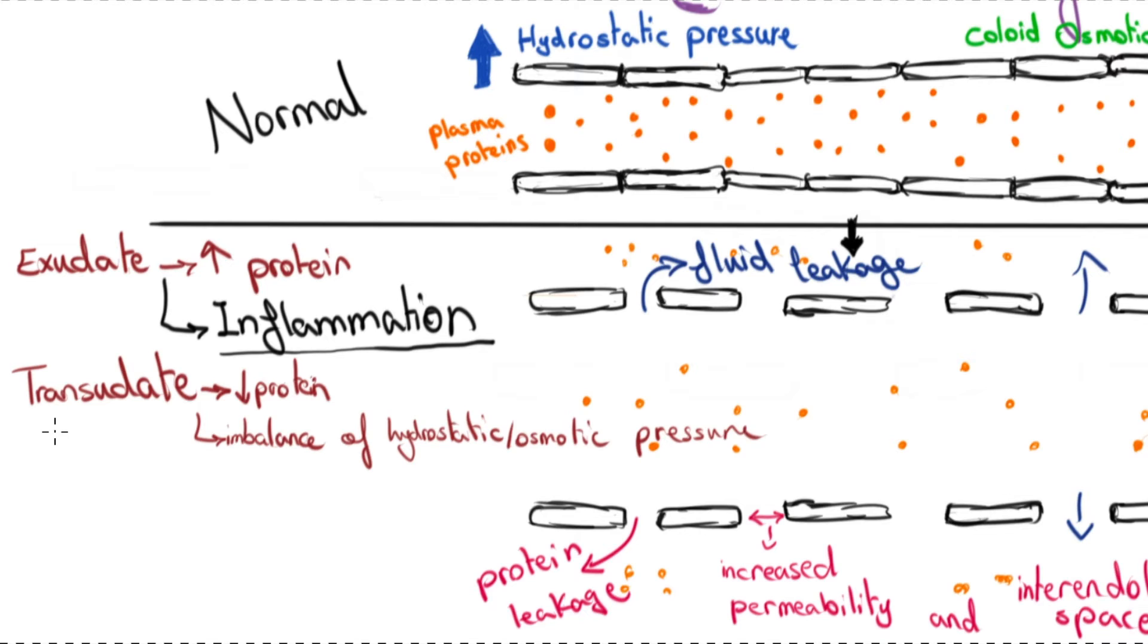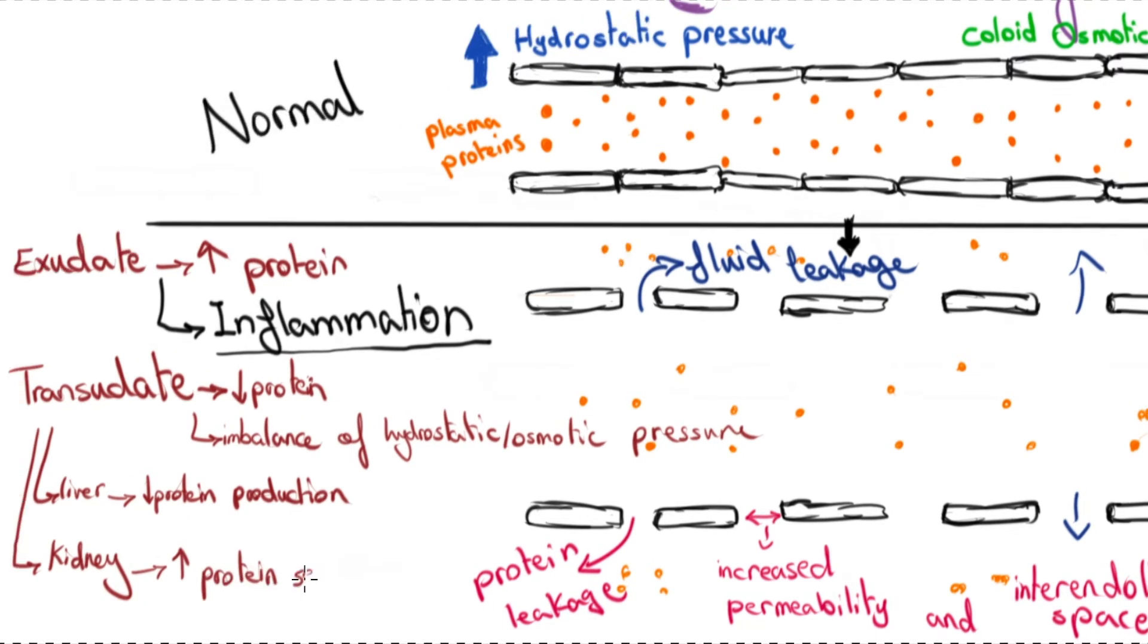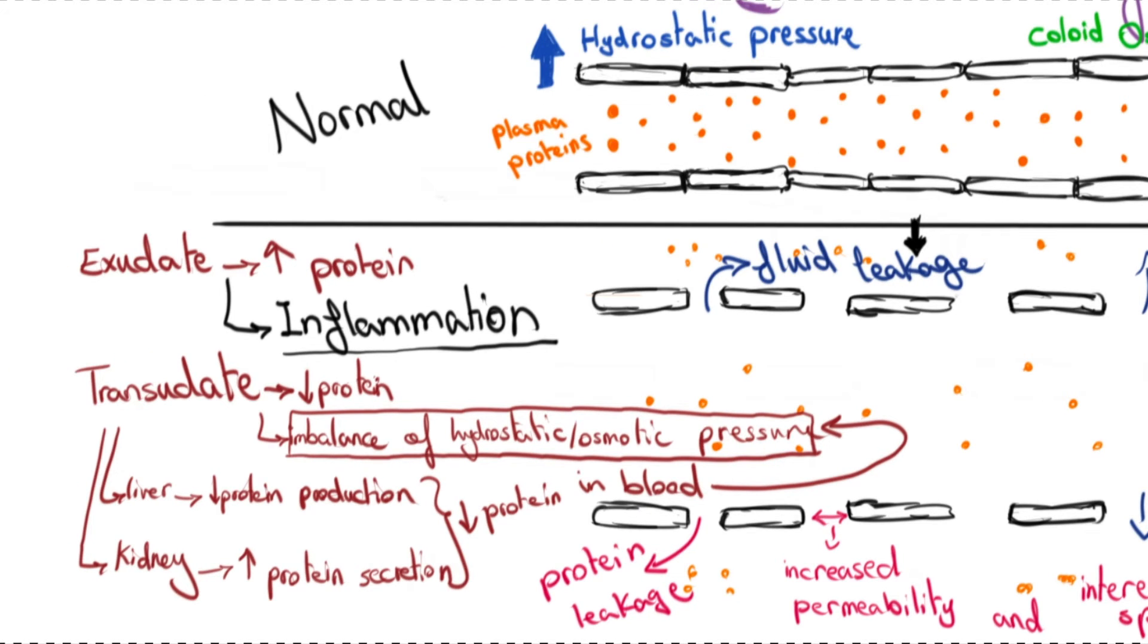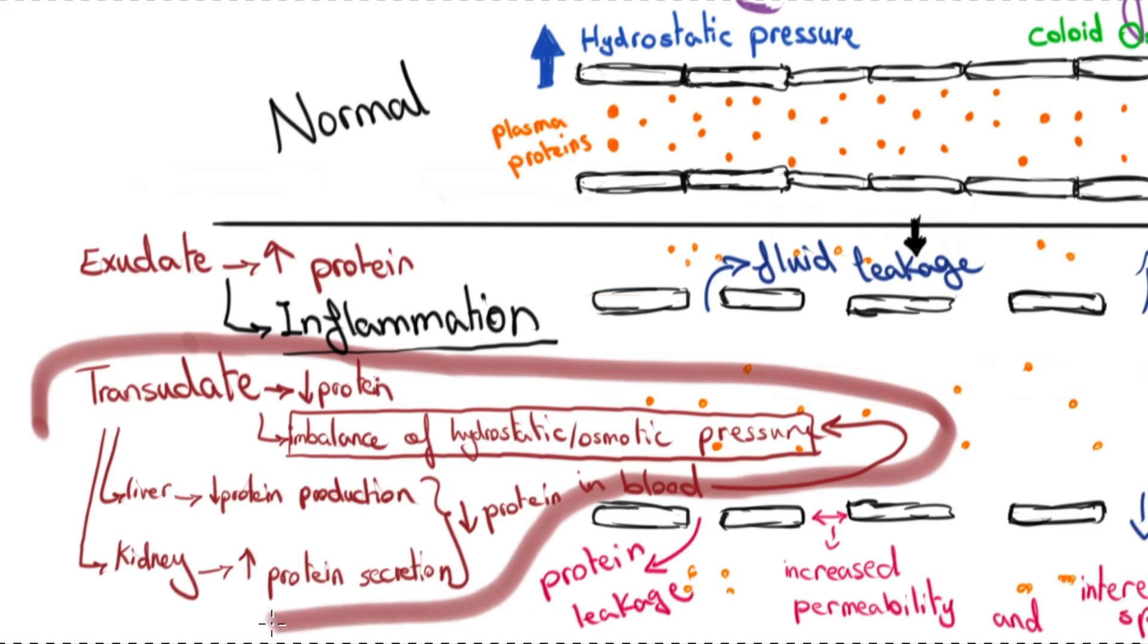The exit of transudate from the blood happens in the case of liver or kidney disease, in which we have too little protein production in the liver or too much protein secretion via the kidney, resulting in too little protein content in the blood and therefore causing osmotic imbalance.